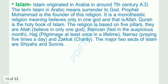Islam originated in Arabia around the 7th century AD. The term Islam in Arabic means surrender to God. Prophet Muhammad is the founder of this religion. It is a monotheistic religion, believing only in one God, Allah. The Quran is the holy book of Islam. The religion is based on five pillars: Allah (belief in one God), Ramzan (fasting in the auspicious month), Hajj (pilgrimage at least once in a lifetime), Namaz (praying five times a day), and Zakat (charity). The major two sects of Islam are Shias and Sunnis.